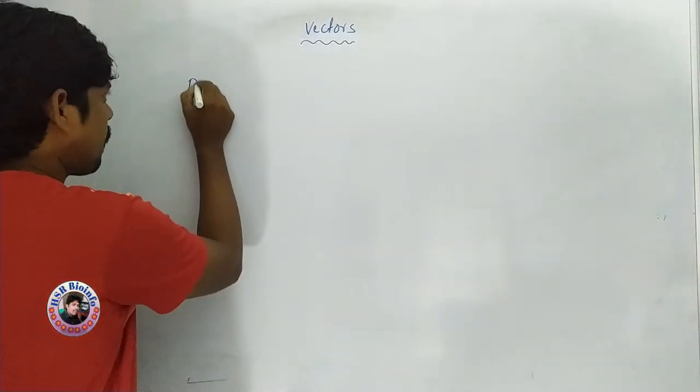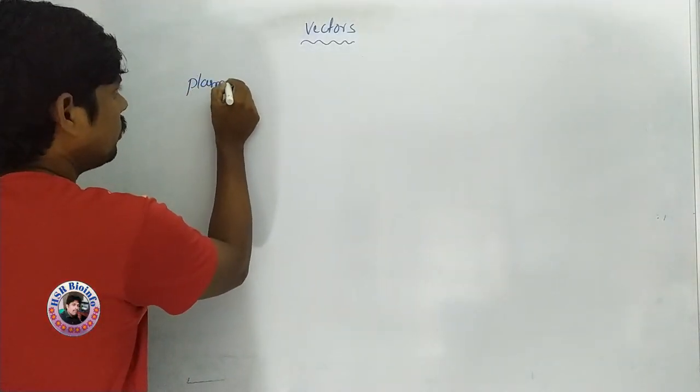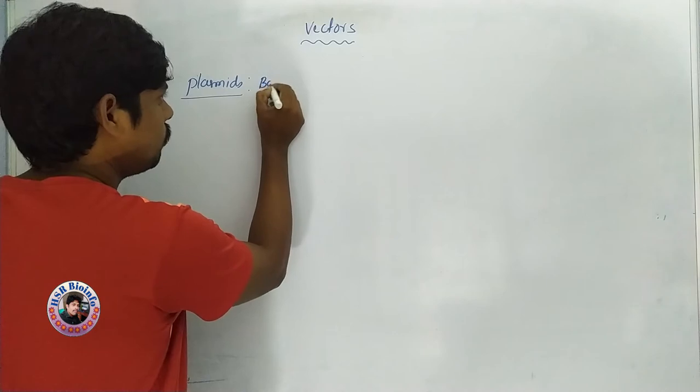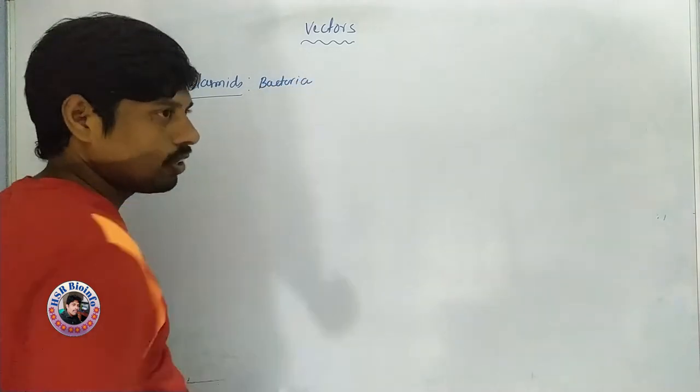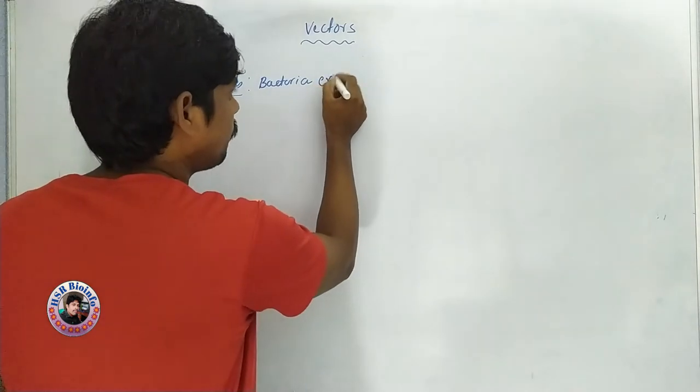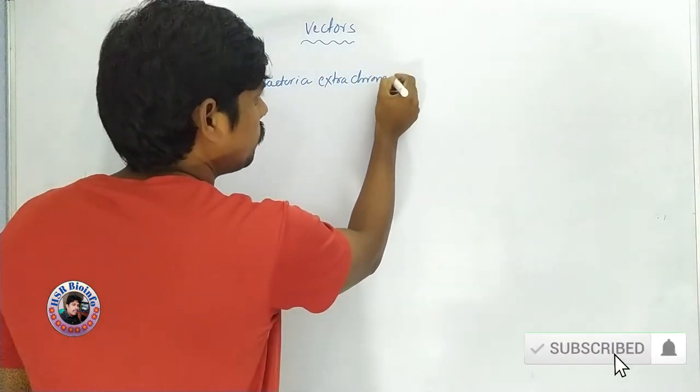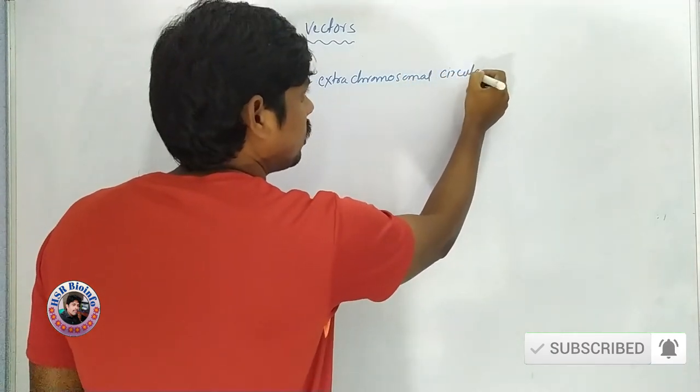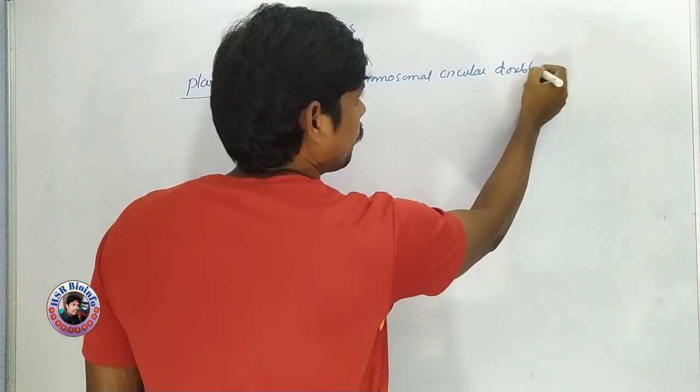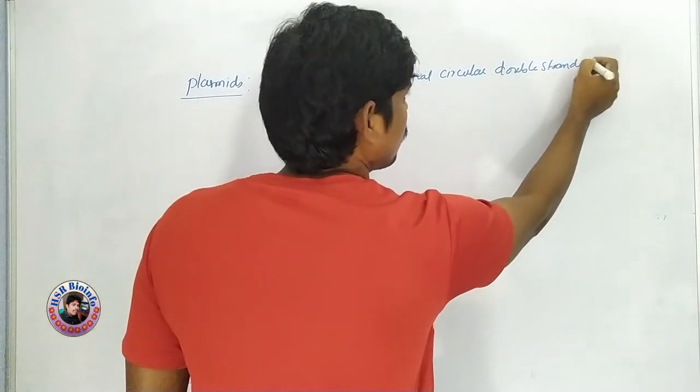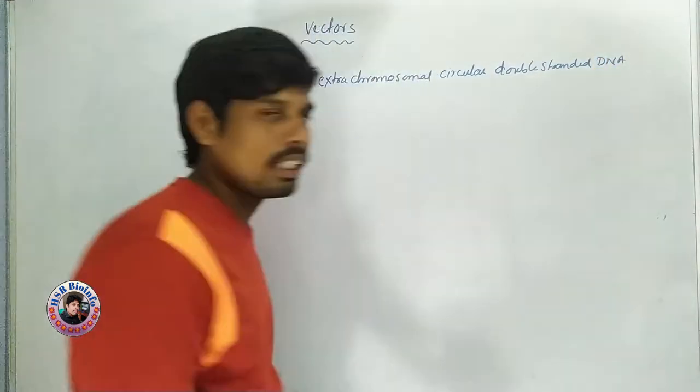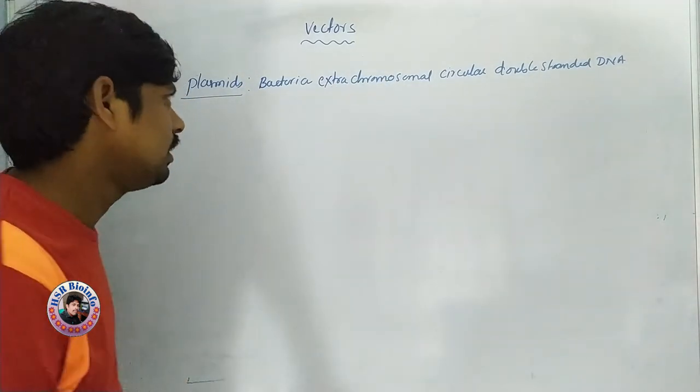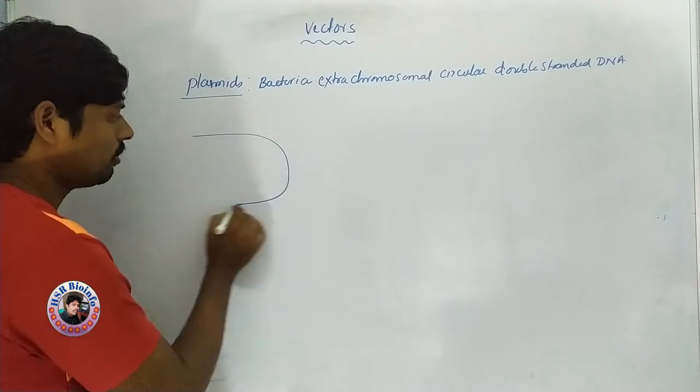Okay, let us see the plasmids. What is the plasmid? Plasmids are found in bacteria - extrachromosomal, circular, double-stranded DNA.